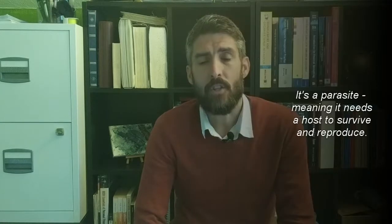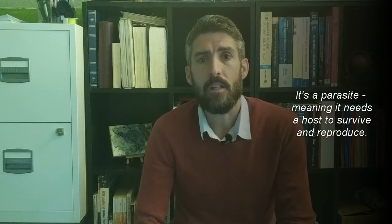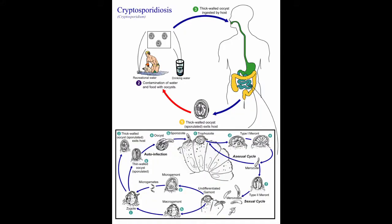It's in a dormant state inside the oocyst, waiting to be ingested. When it's ingested, it goes down into the stomach where strong stomach acids help to break down the shell, and it basically hatches out inside the infected person or animal and goes through its life cycle.